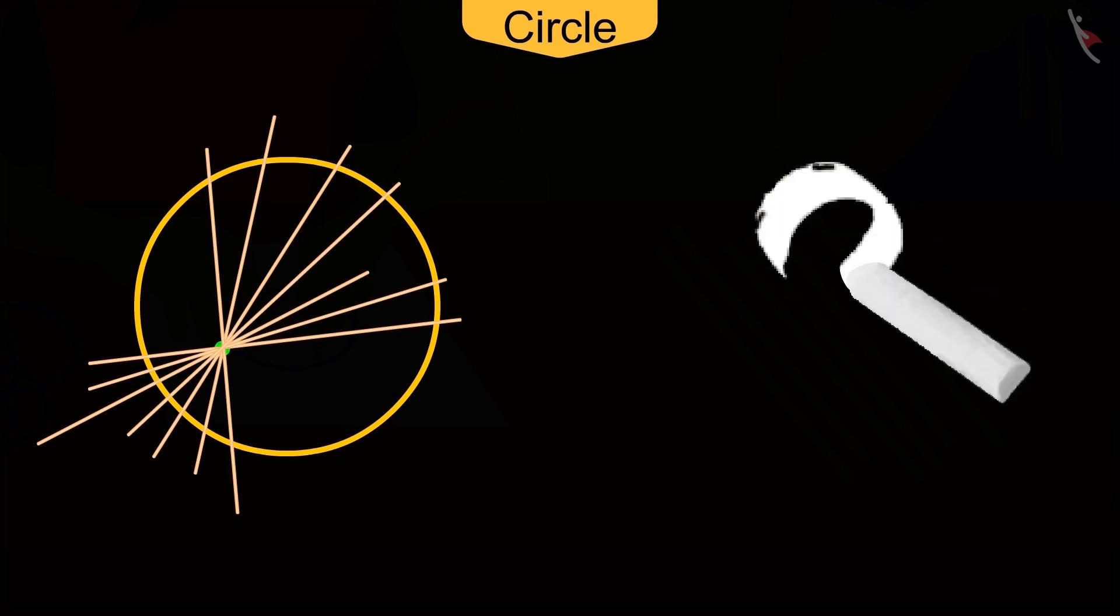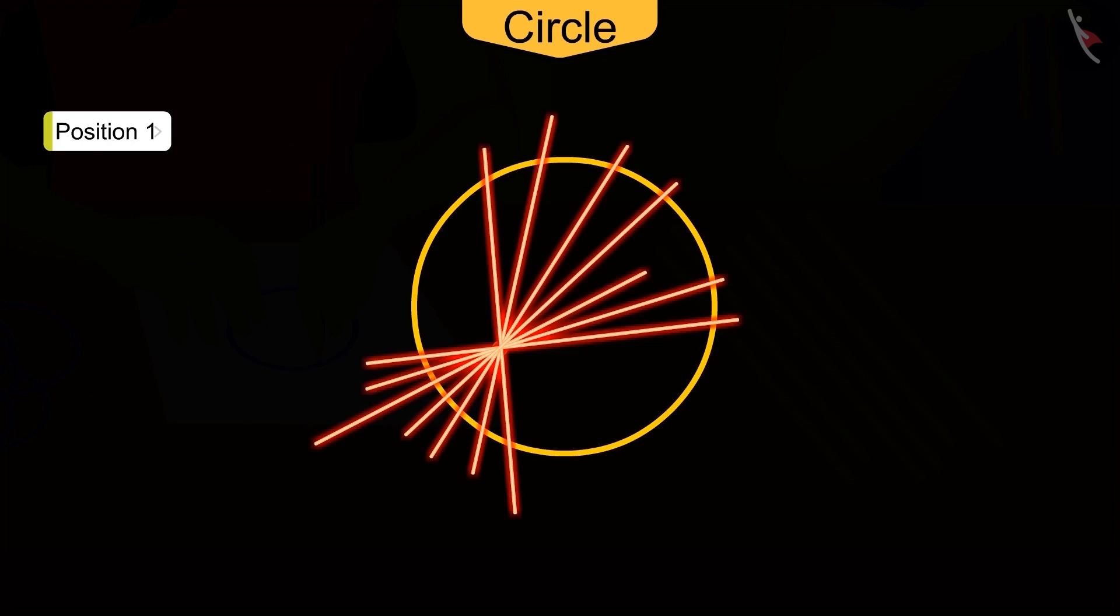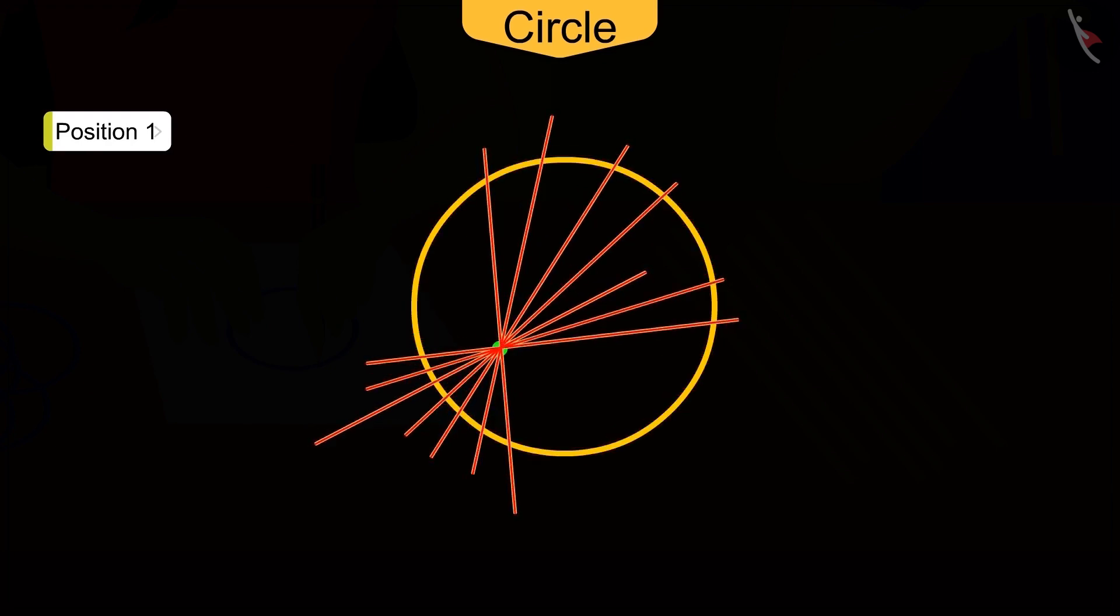Now what can you say by looking at this situation? If we consider these sticks as lines on the circle, then we can see that all the lines intersect the circle at more than one point. And we know that a tangent intersects the circle at only one point.